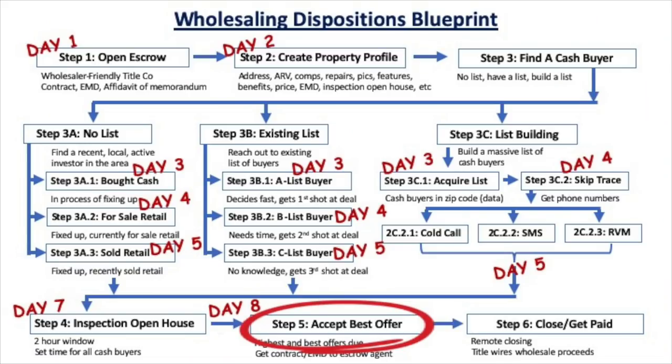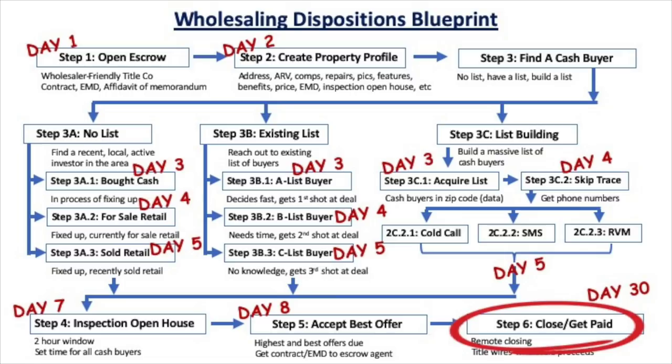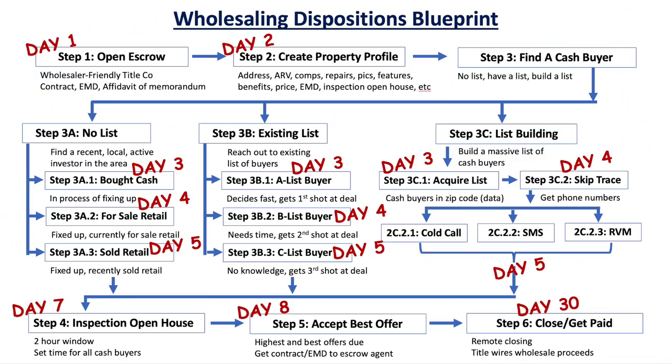Then step five, which happens on day eight, is to accept the best offer, execute an assignment contract, and get that contract along with the cash buyer's non-refundable earnest money to the same escrow agent you opened escrow with on day one. If they are wholesaler-friendly, they will know exactly what to do. My goal is to secure my cash buyer in 10 days, so this gives me a day or two extra. Step six happens on day 30, or whenever the closing is scheduled per your contract with the seller. On the day of closing, the cash buyer closes directly with the seller, and if the title agent knows what she's doing, you don't need to attend — the title company will wire you your wholesale proceeds. You just followed my six-step wholesaling distribution process and flipped your contract to a cash buyer.